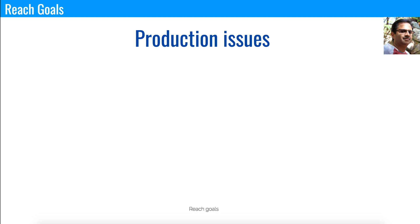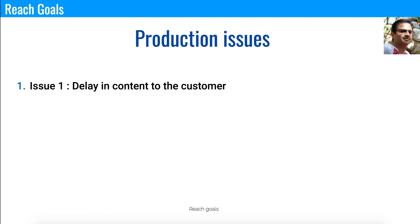Let's talk about common production issues in CDN. The first is delaying content to the customer. For example, on Black Friday all customers want to see refreshed content at exactly 12 midnight due to deals and sales. If you publish content to the origin server at that moment, it won't reflect across the globe simultaneously — it takes some time. You need to plan ahead and publish content a little early so it gets pushed to all edge servers in time.